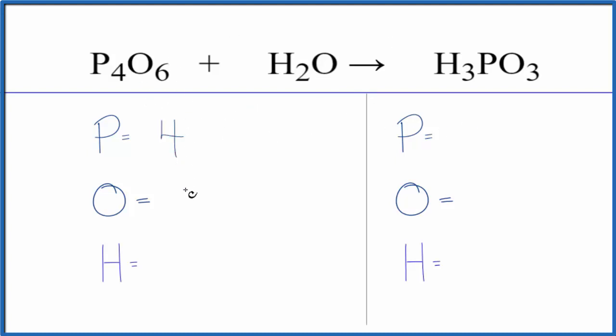We have four phosphorus atoms, six oxygen, plus don't forget the oxygen here in water, that gives us seven. Then we have the two hydrogen atoms. Product side, one phosphorus, three oxygens, three hydrogen atoms.